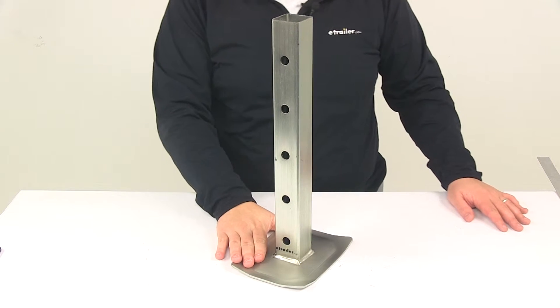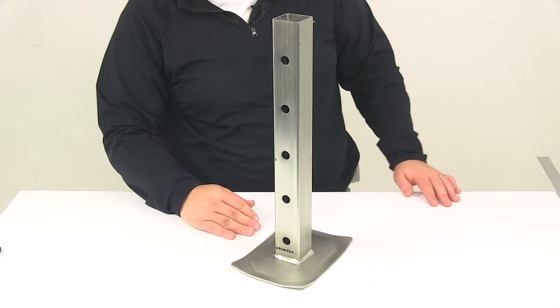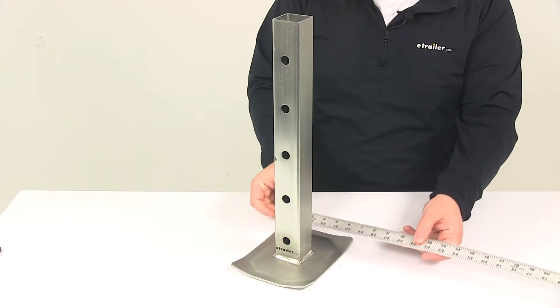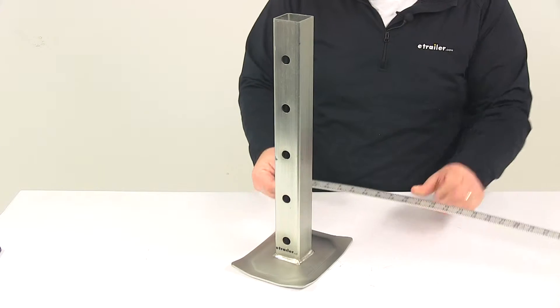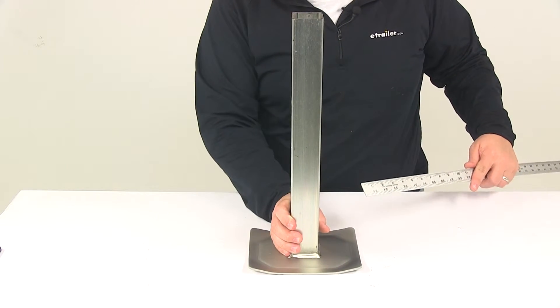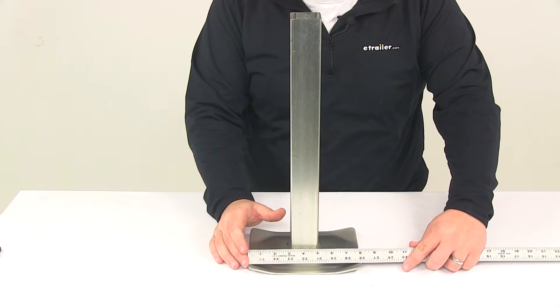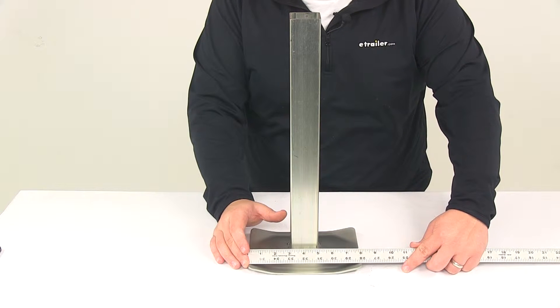The footplate is welded to the bottom of the drop leg. The footplate measures about six inches in one direction and about eight inches in the other direction, so it's a nice large size.